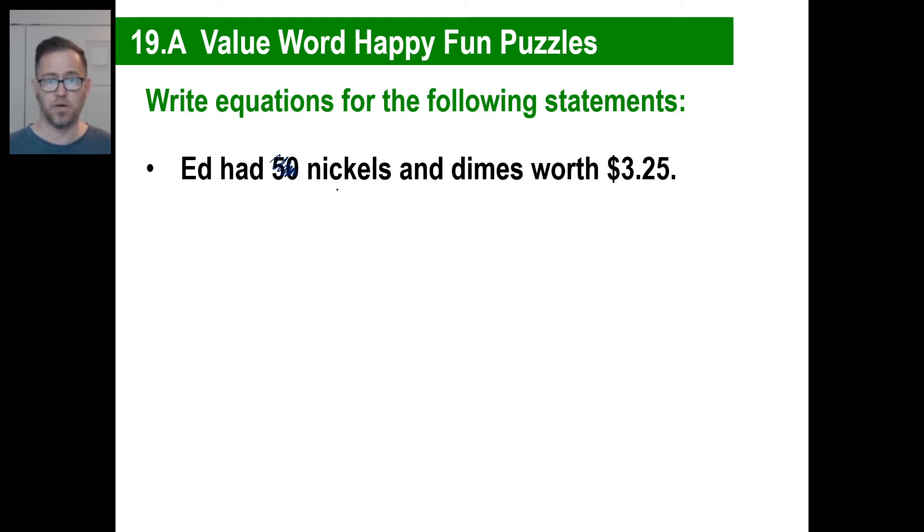If Ed has nickels and dimes worth $3.25, we'll say five times the number of nickels plus 10 times the number of dimes equals that many cents. If we're going to do cents, let's do 325 cents. That's because five cents here, 10 cents there, 325 total. That's your equation.